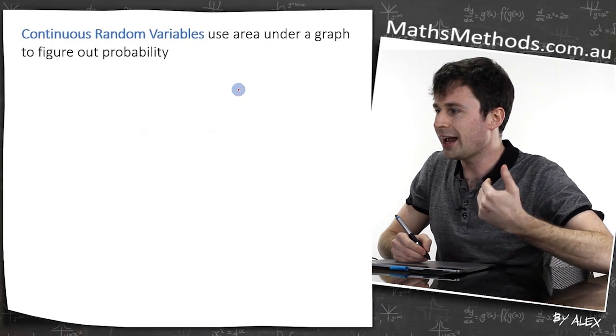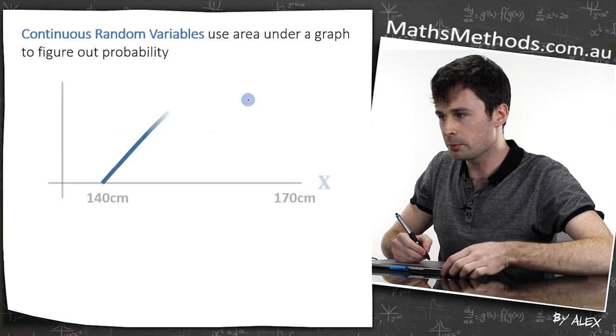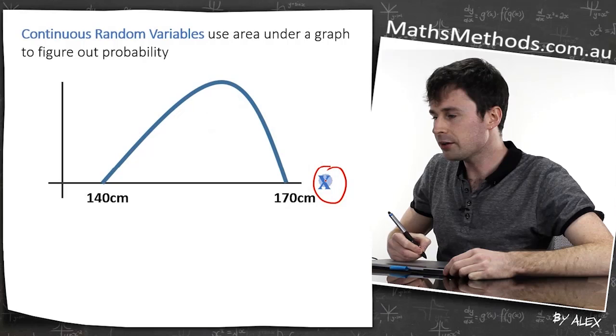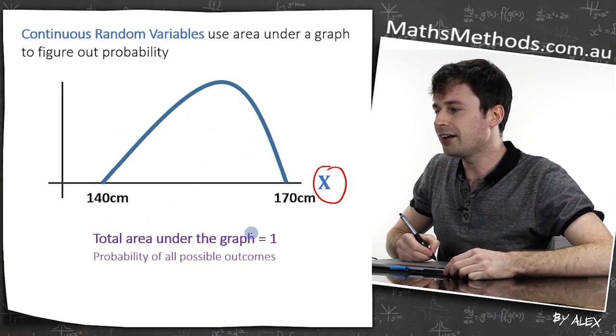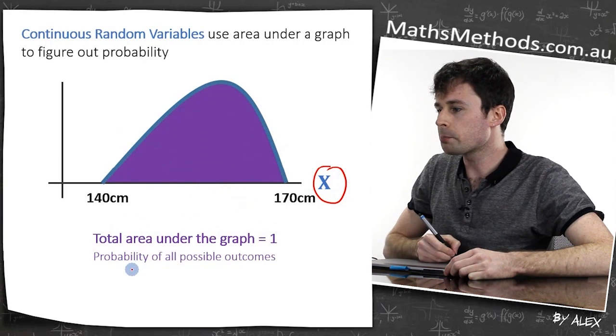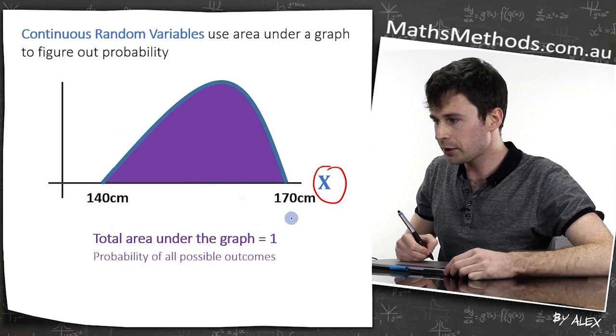Continuous random variables use area under a graph to figure out probability, with a random variable X, and the total area under the graph equals one. This is the probability of all possible outcomes.